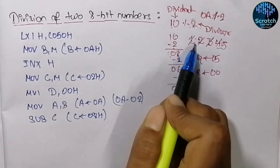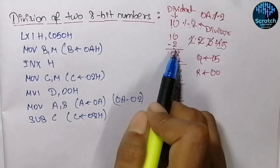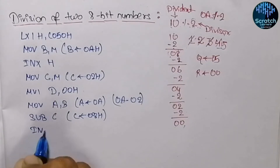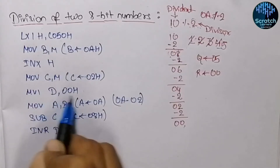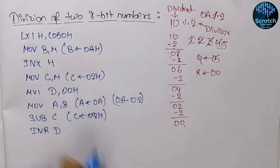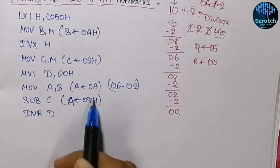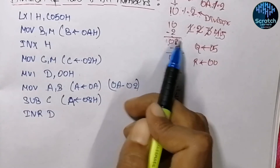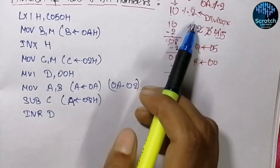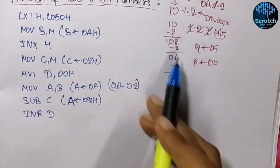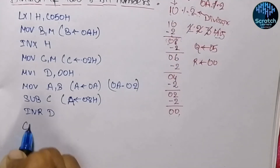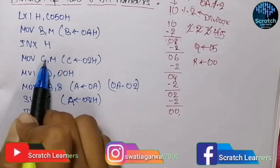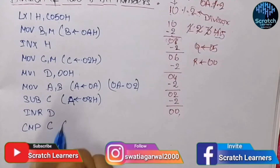After subtracting, we increment the quotient since we have subtracted once, so we perform INR D — we are storing the quotient in register D. Now after subtraction the result is in the accumulator, so we compare the accumulator content (the remainder) with the divisor to know whether it can be further divided. We use CMP C to compare accumulator with divisor stored in C.